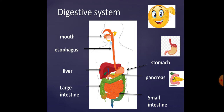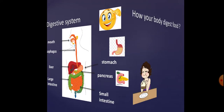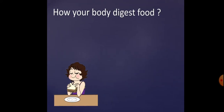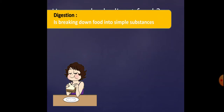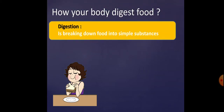We start with how your body digests food. We begin digesting the food — breaking down the food into simple substances — starting from our mouth, as we start to chew the food by our teeth.